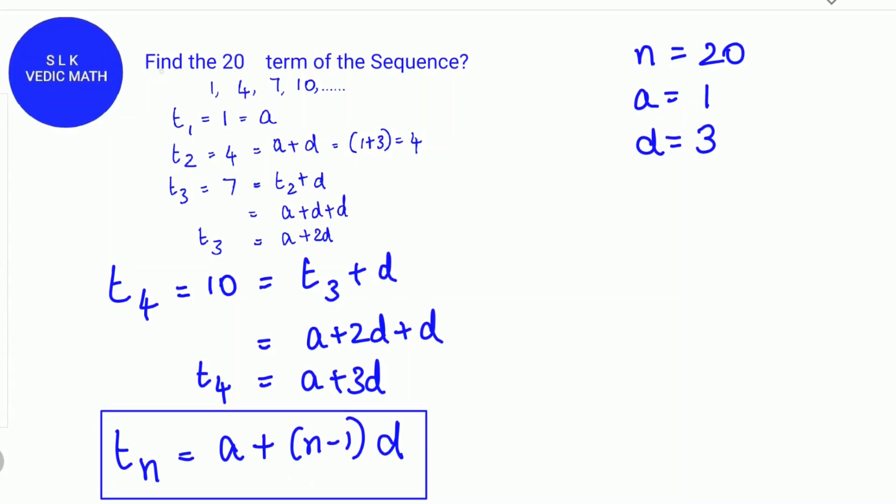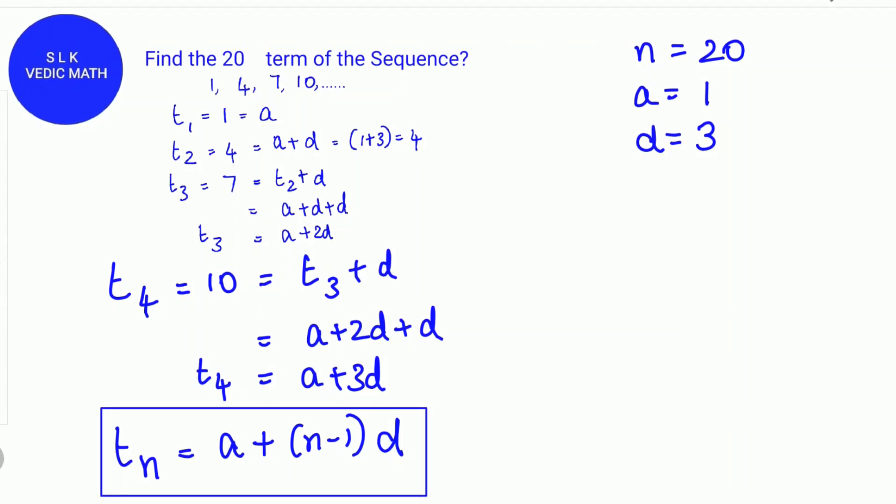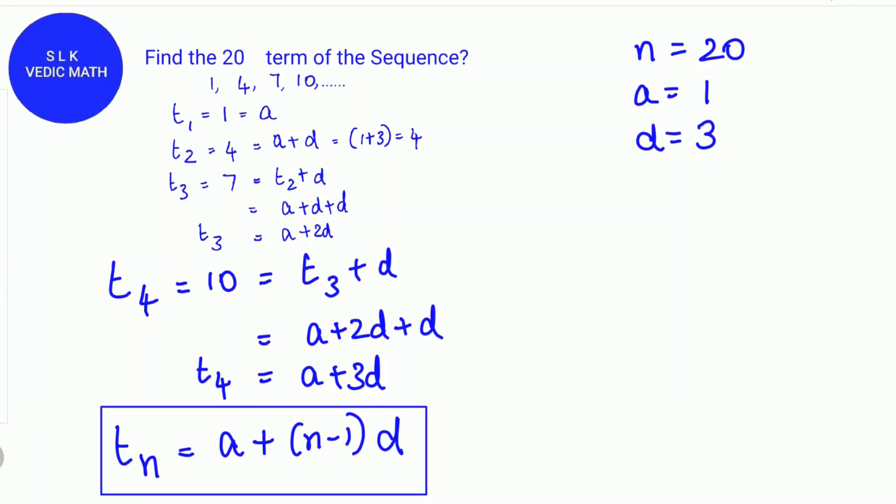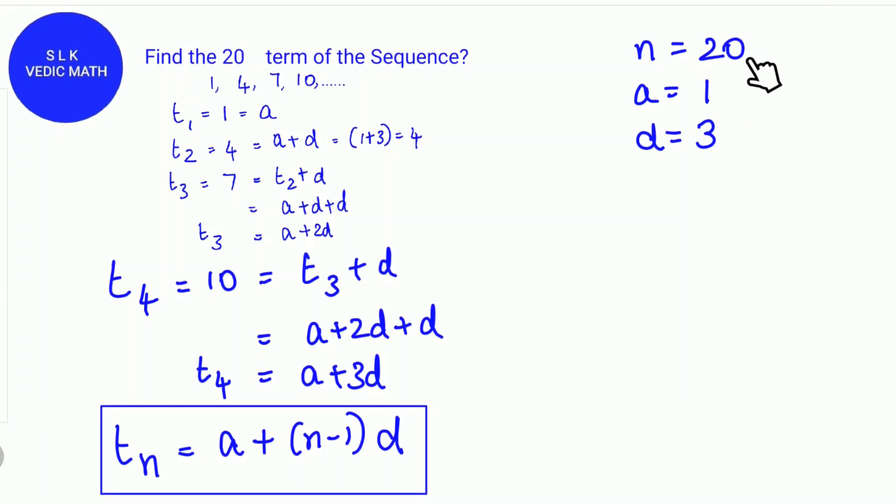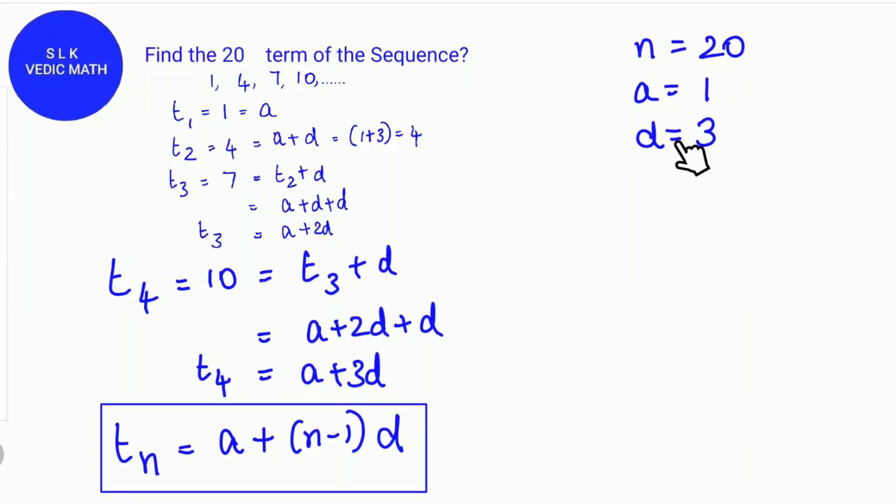In this question, we have to find the 20th term T20. We substitute the value n with 20. N is 20 and a is the first term which is 1 and d is the common difference which is 3.